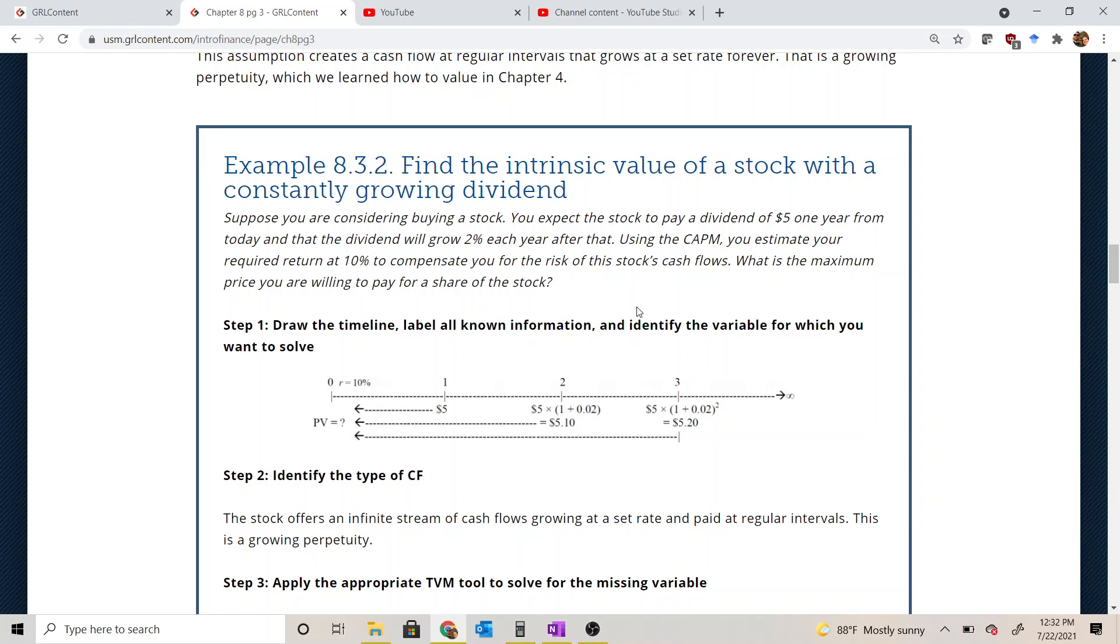So what will typically happen, if you ever read an analyst report, is the analyst will forecast out specific dividends, one, maybe two. If you ever see one past two or three years, you just know that it's pure fiction, but sometimes you'll see them. And at some point, after one or two years, instead of forecasting specific dividends, they'll assume a set growth rate.